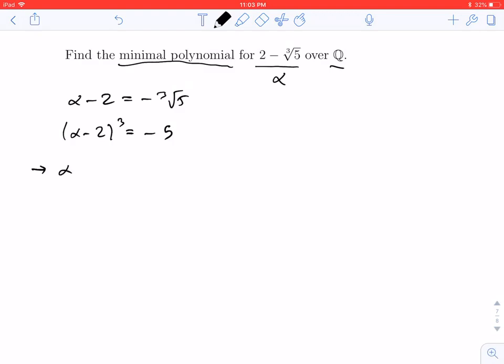And so that tells me that alpha is a root of the polynomial (x - 2)³ + 5, which is a polynomial with rational coefficients.